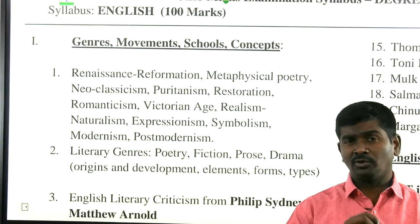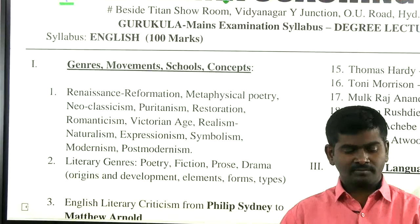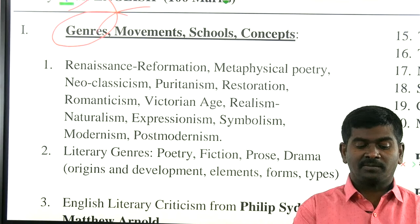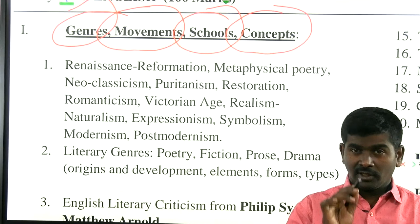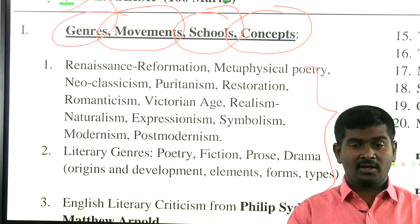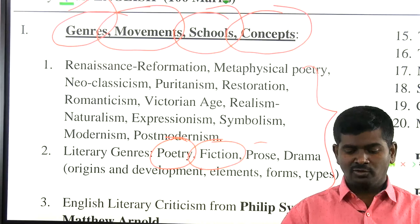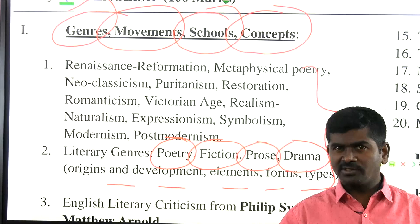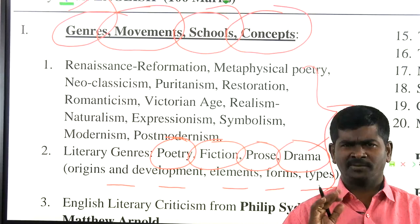My focus is going to be how you can have good marks and how you can improve your score in genres, movements, schools, and concepts. Different concepts are given — you are required to focus on genre poetry, genre fiction, genre prose, genre drama — and their origin, development, elements, forms, and different types. You can expect 3 to 5 bits in your exam, at least 1 to 2 bits on every concept.